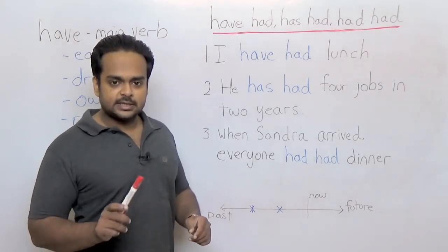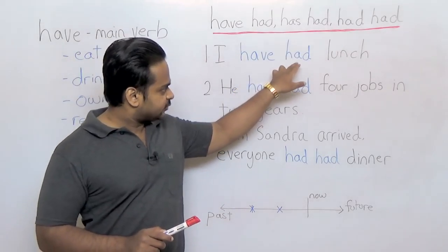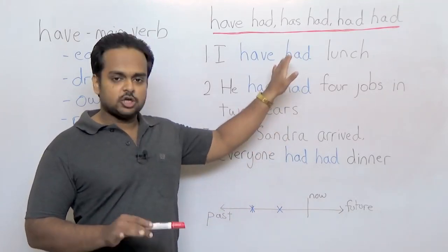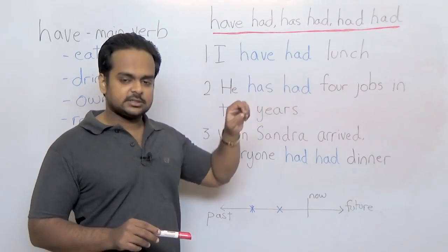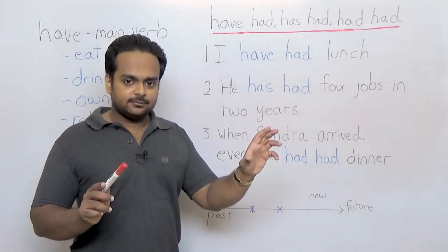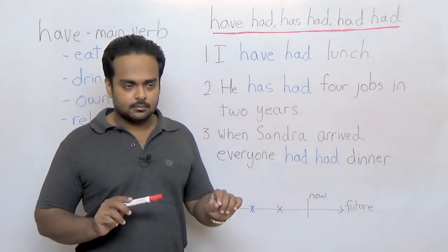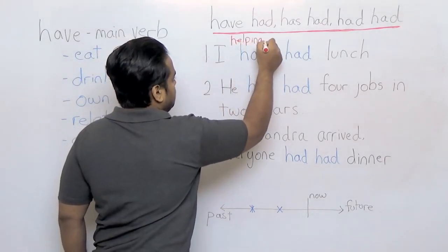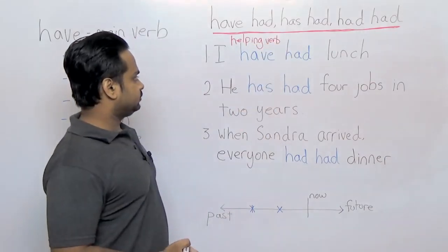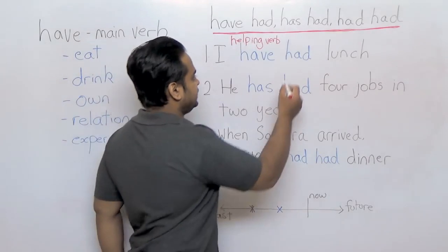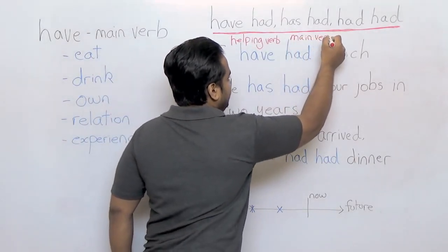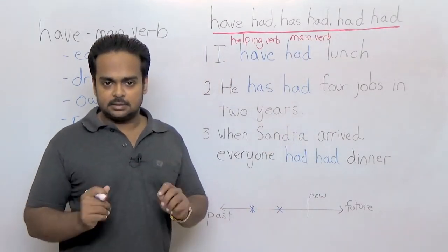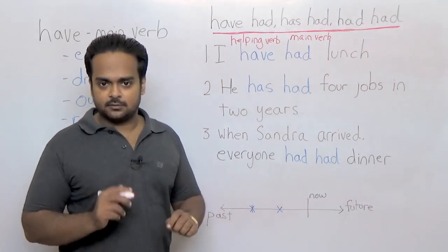When you see two have in a sentence, this is have, this is also have, it's just in the past participle form, it's had but it's basically just have. So when you see two haves in a sentence, then the first have and the second have have different meanings. This first have is called a helping verb, and this had is called the main verb. It's called the main verb because it has the main meaning in the sentence. This have only shows the tense of the sentence.